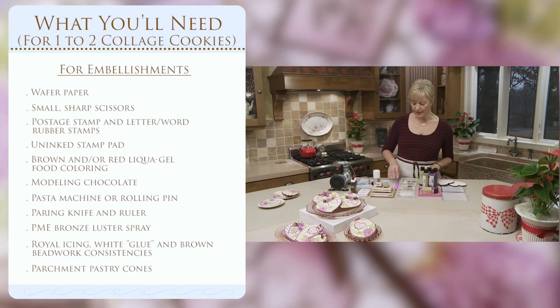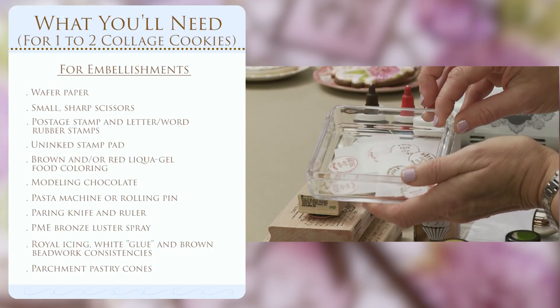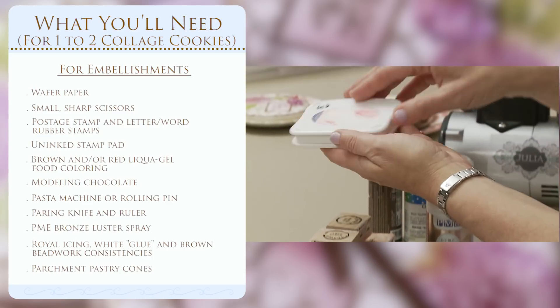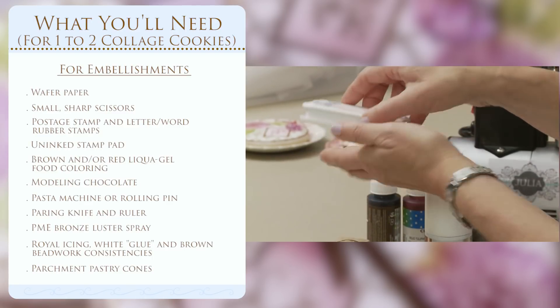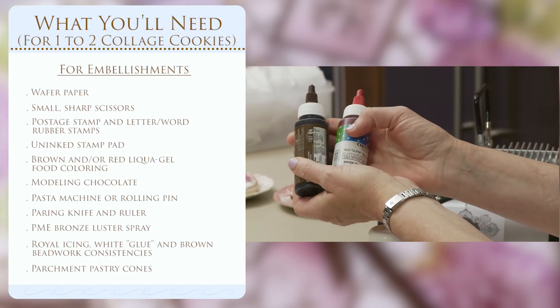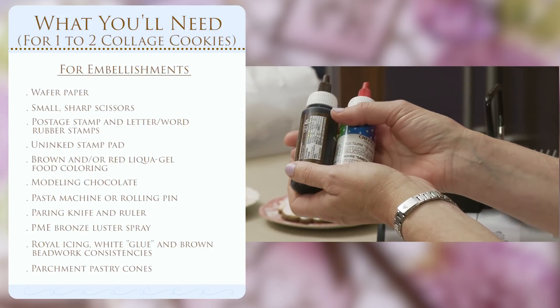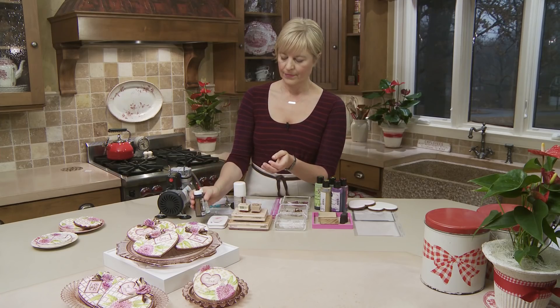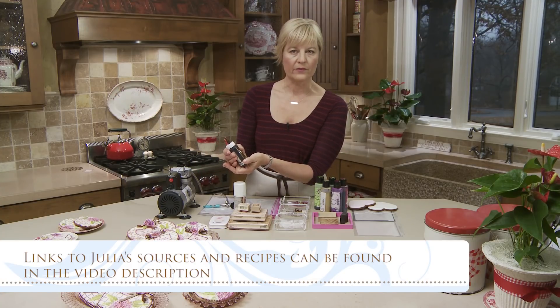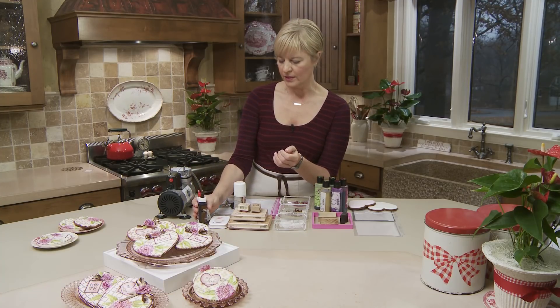And then lastly you'll need wafer paper again not only for the flowers but also to make little postage stamp appliques that will go on the cookie and add a little bit of dimension. To stamp those elements naturally some rubber stamps, an uninked stamp pad which we'll be applying food coloring to, and some food colorings to ink those pads. I typically use the same liquid gel colorings that I use in making my royal icing. You could also use airbrush coloring but I find these have a little bit more body and seem to work better for me.